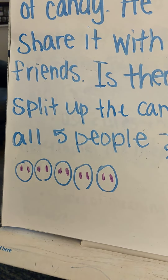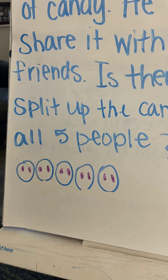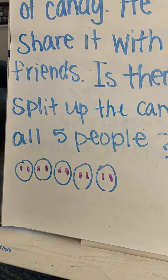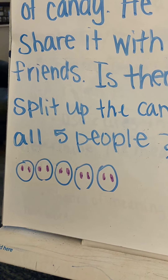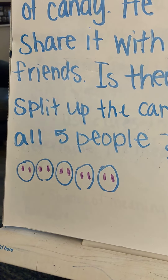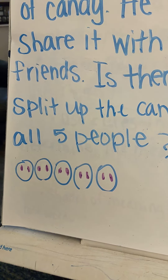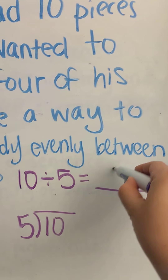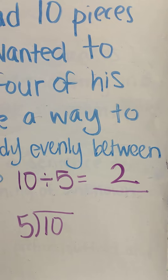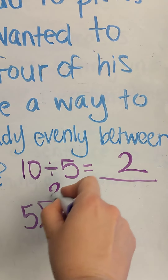With division, it's a lot like fractions — it has to be broken up into equal groups, or it doesn't work. So we have two pieces of candy in each group. So over here, 10 divided by 5 equals 2. Or if we have it written like this, 10 divided by 5 equals 2.